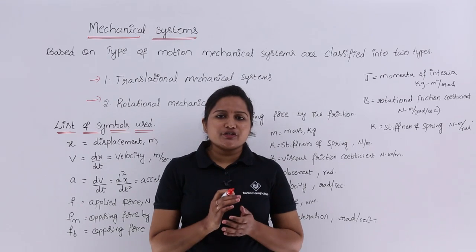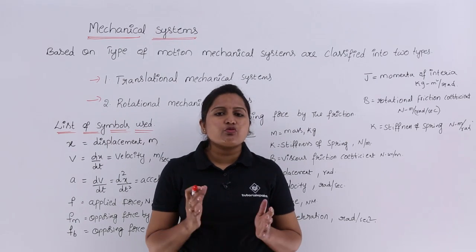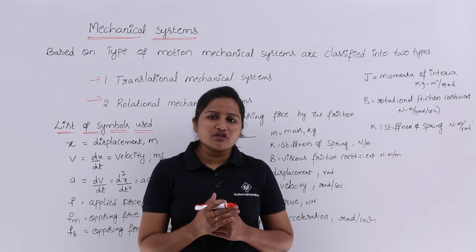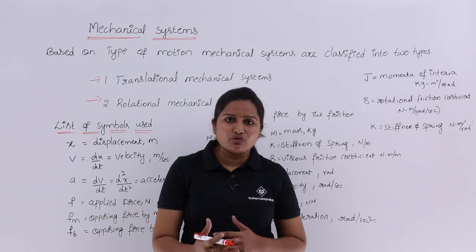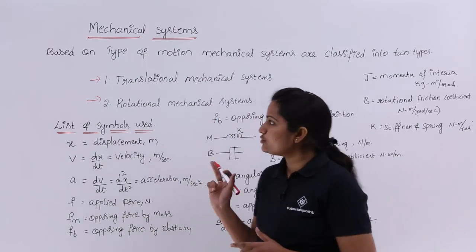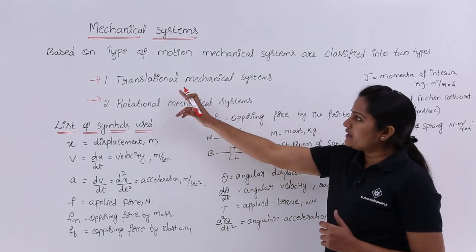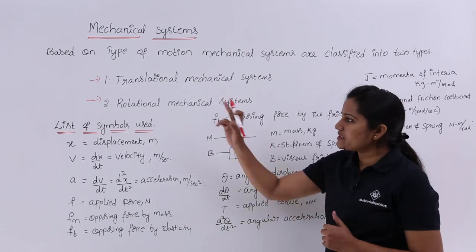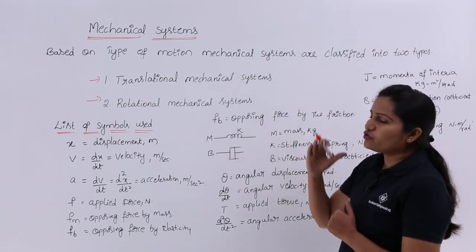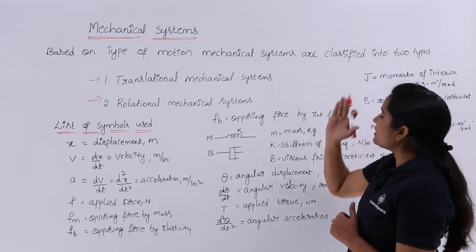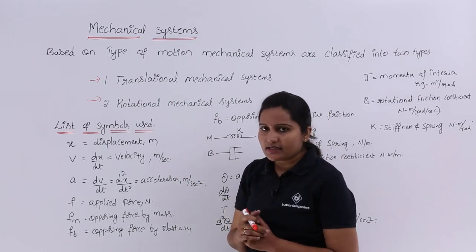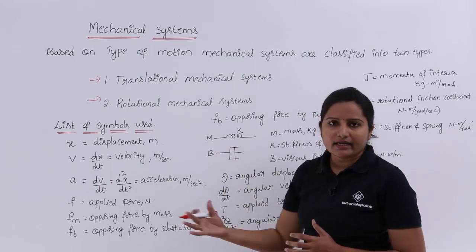In this video, we are going to discuss modeling of mechanical systems. According to the motion of these systems, we are going to model and classify them into two basic types: translational mechanical systems and rotational mechanical systems. Based on type of motion, mechanical systems are classified into these two types.